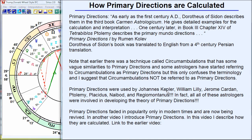Johannes Kepler, William Lilly — we know William Lilly as one of the great horary astrologers, but he also used primary directions for forecasting. Jerome Cardin, the great mathematician and astrologer; Ptolemy, Placidus, Nabod, Regiomontanus — you probably recognize some of these names for other contributions they made to astrology. Not only did they use primary directions, but they discussed the theory behind it and what they thought was the proper way to get the correct timing.